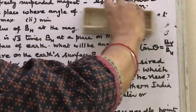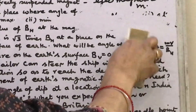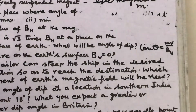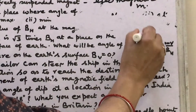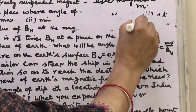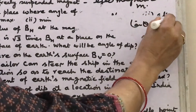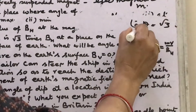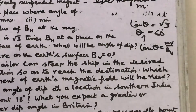Since BV divided by BH equals root 3, that means tan theta equals root 3, therefore theta equals 60 degrees.